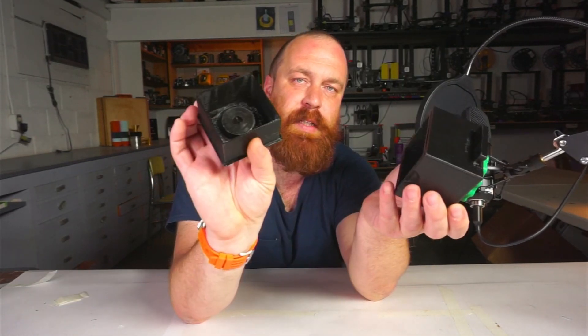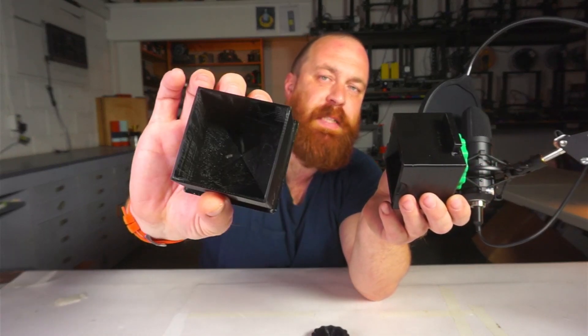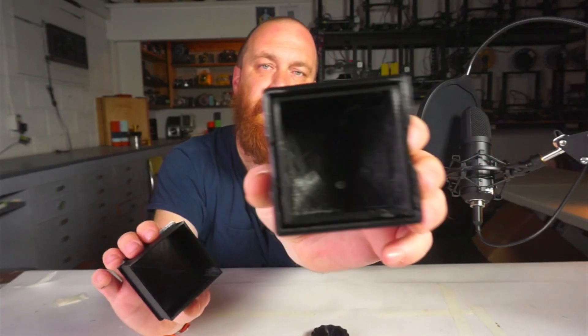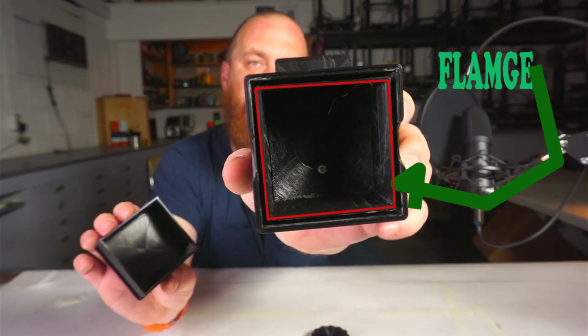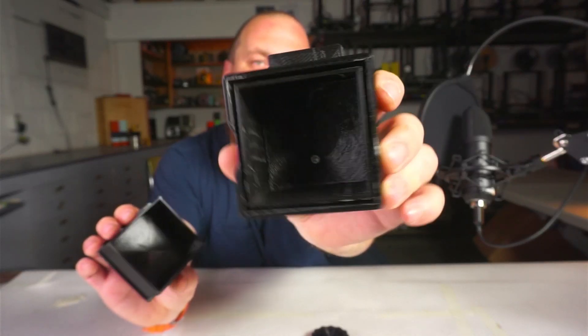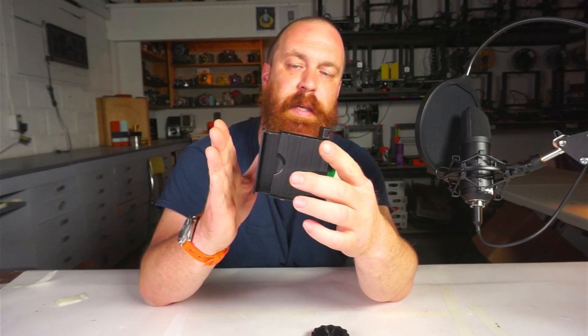As this back opens, you put a piece of paper in here, and then the flange on the inside of the camera holds that paper down, forms a border.